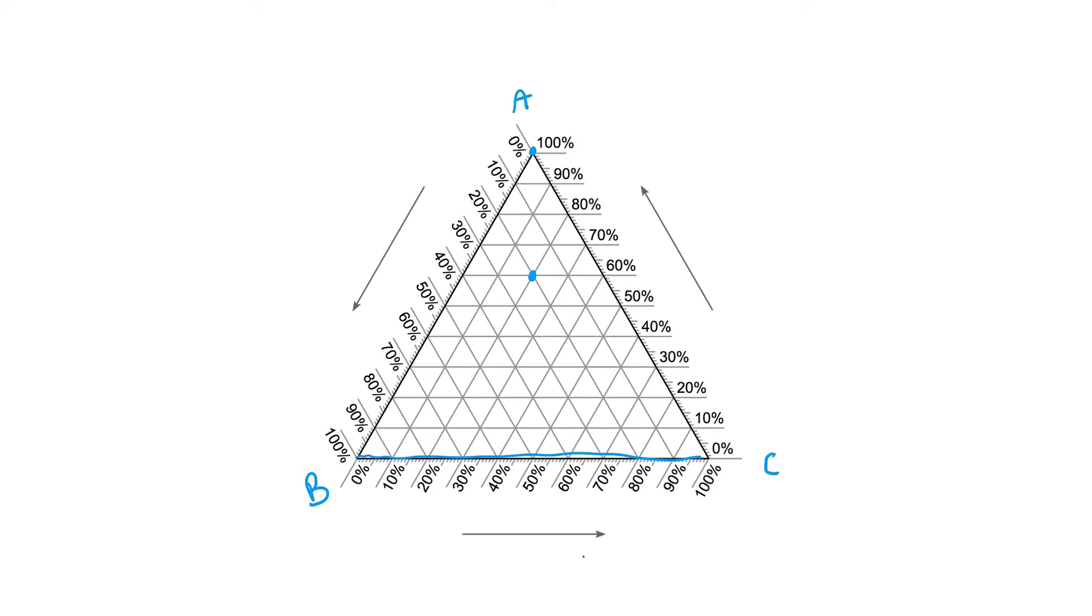This line represents that the substance has no component A in it at all. If we look at the next line up, parallel to this line opposite the apex of A, we will see that the substance is 10% A. Therefore, all the numbers up this side refer to component A.